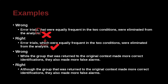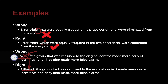While the group that was returned to the original context made more correct identifications, they also made more false alarms. The corrected version uses 'although.' The word 'while' is very unclear because 'while' is about time. Here the intended meaning is: it looks like A, but actually it's B — a contrast. A better word for that is 'although,' because 'while' often implies time and confuses the reader.